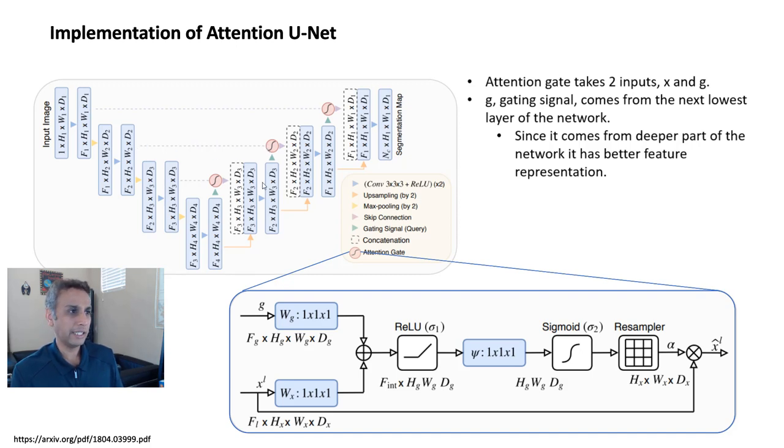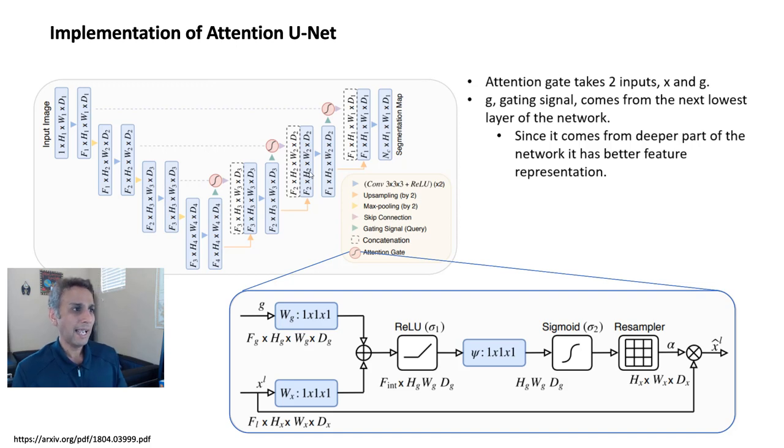And since this comes from a deeper part of the network, this input is coming from a very deep part of the network. So that means this has much better feature representation. So this is giving us very good features. It already hopefully knows what is rounded and what is sharp edges and what is the texture and so on. So it has all this information from our training. And X is coming from the skip connection, like I mentioned, so right there. So G from here, X from there.